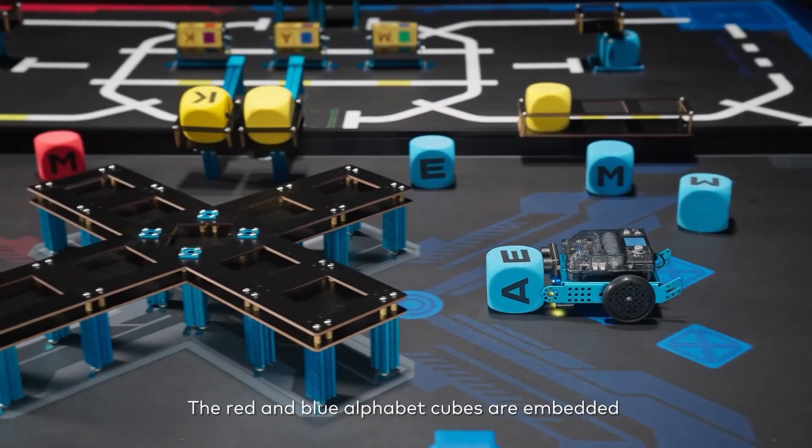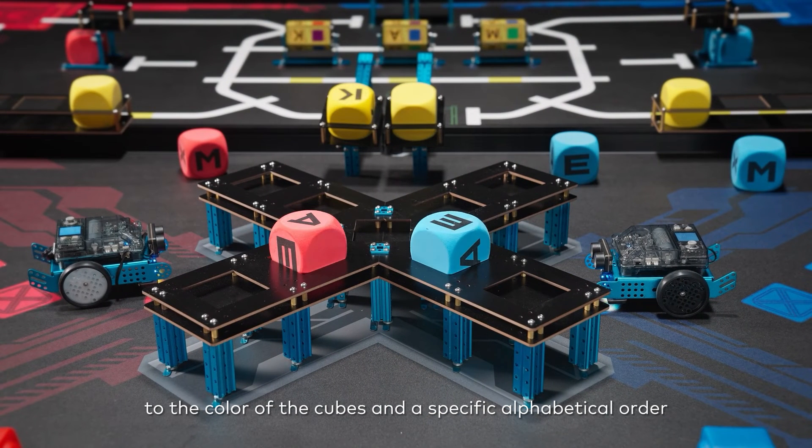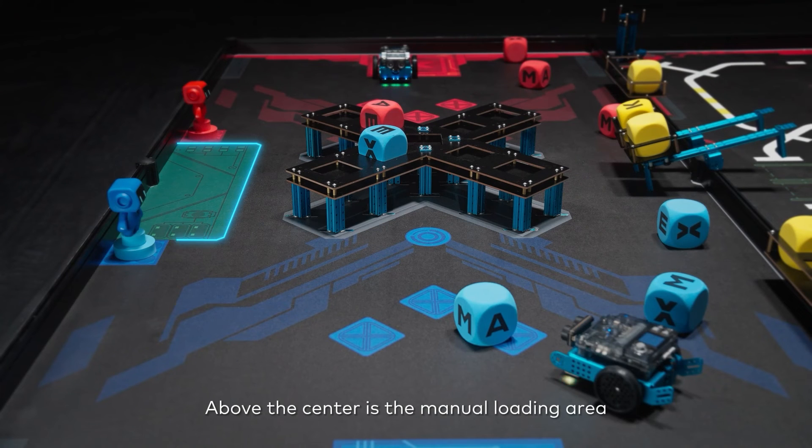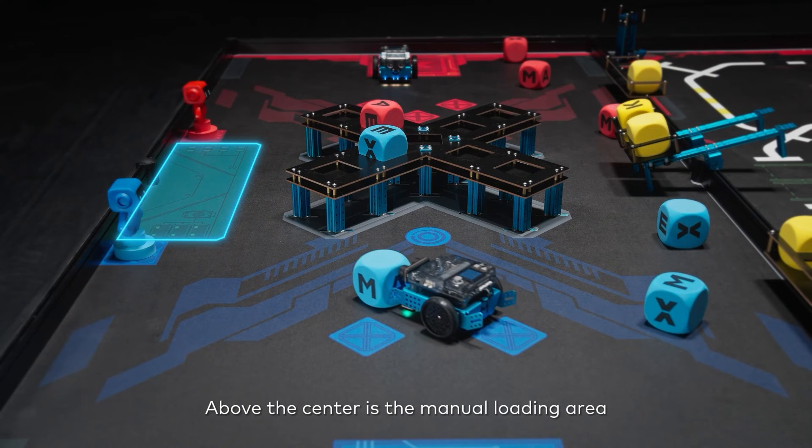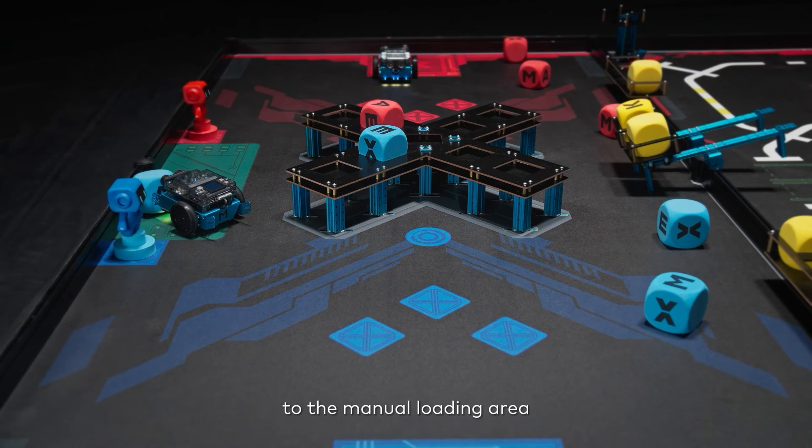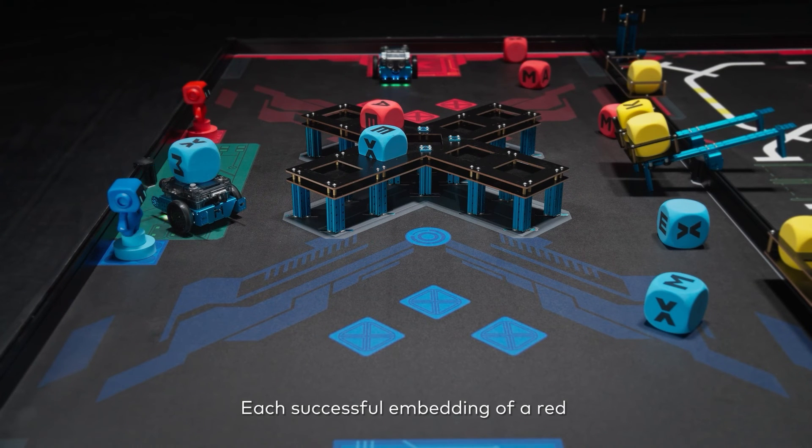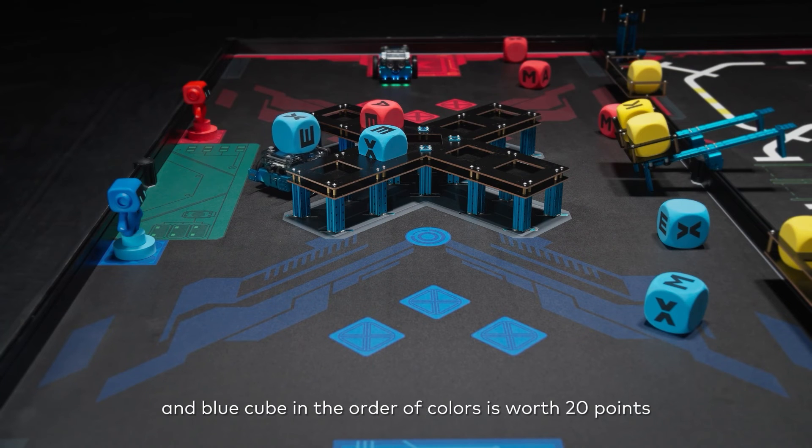The red and blue alphabet cubes are embedded in the matrix research station according to the color of the cubes and a specific alphabetical order. Above the center is the manual loading area. The operator can move the cubes to the manual loading area, and the observer can change the cube's position.